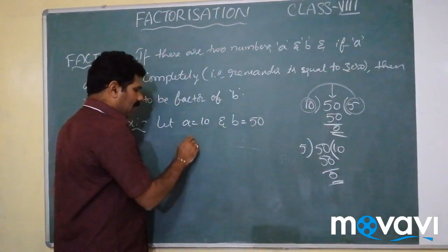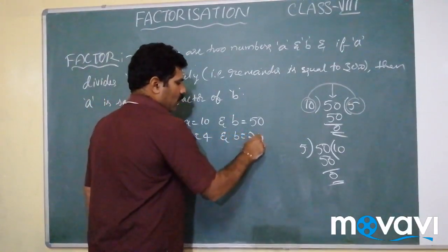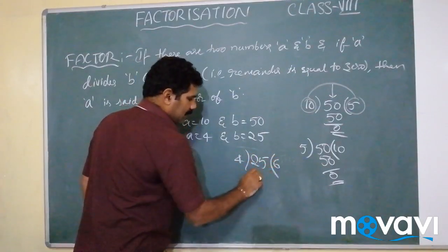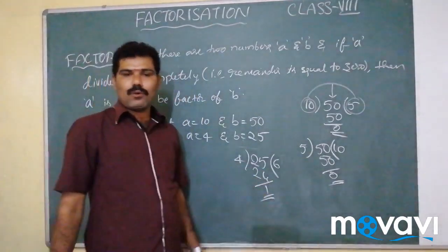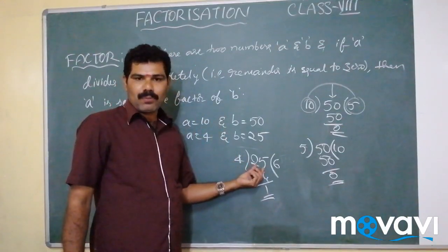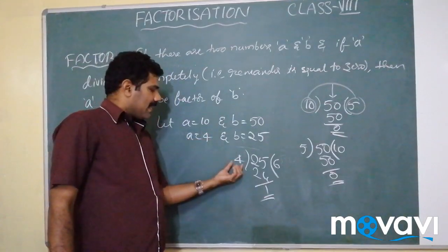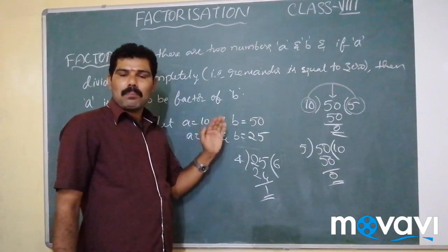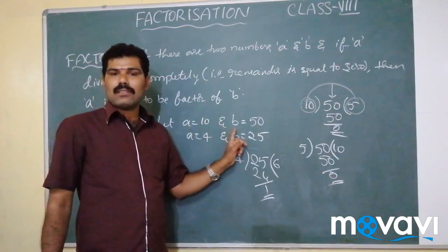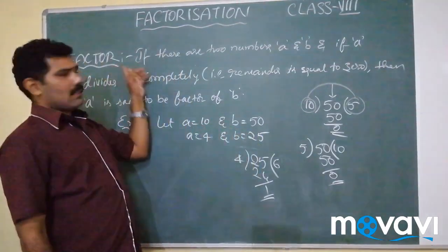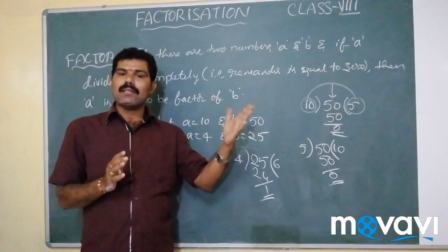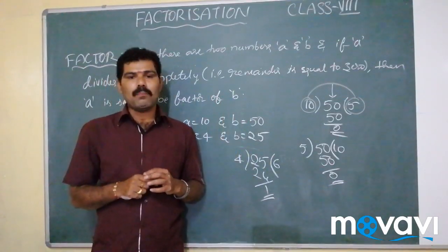If you take another example where A equals 4 and B equals 25: if you divide 25 by 4, you get 4 sixes are 24 with a remainder of 1. Therefore the remainder is not equal to 0, and we cannot say that 4 is a factor of 25. So if and only if A divides B completely — that is, the remainder equals 0 — then we can say A is the factor of B.